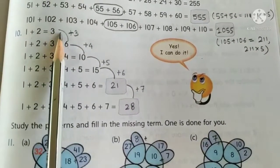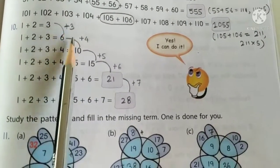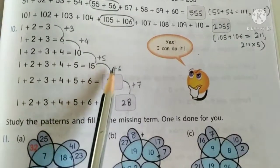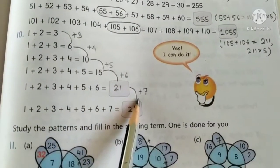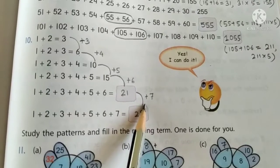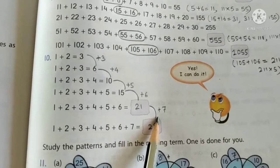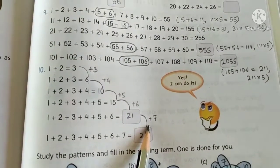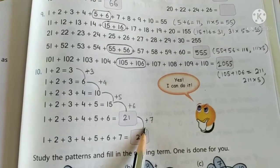Here the next number is obtained by adding plus 3, plus 4, plus 5, plus 6, plus 7, and so on. I hope you have understood these patterns and you can solve these questions now on your own. Thank you.